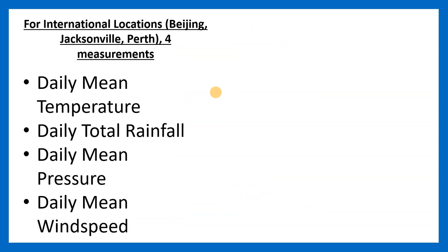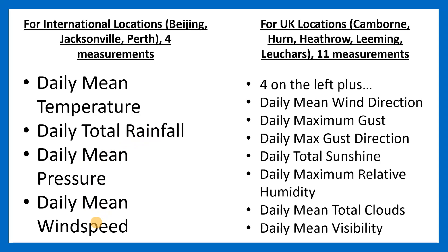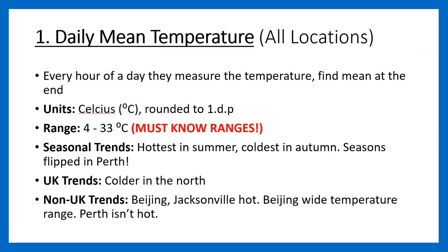So what actually is the data — what are we actually measuring? For the international locations — Jacksonville, Beijing and Perth — there are four measurements: daily mean temperature, daily total rainfall, daily mean pressure, and daily mean wind speed. For the UK locations, you have 11 measurements. You still have those four, but you also have seven additional measurements not available for the international locations. The first one is daily mean temperature. Every hour of the day they measure the temperature, and then at the end of the day they take the mean of all those temperatures. The units are Celsius, everything is rounded to one decimal place, and the range of temperatures is about 4°C to 33°C.